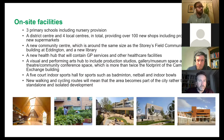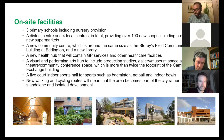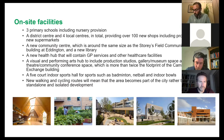The on-site facilities confirmed in the plan — as a minimum — include three primary schools with nursery provision, a district centre and four local centres generating over 100 retail units including five supermarkets, a new community centre about the same size as the Storyfield Centre in Eddington, a new library, a health hub including GP services, a visual and performing arts hub with studios, theatre space and community conference space — broadly more than twice the footprint of the Cambridge Corn Exchange — a five-court indoor sports hall, and new walking and cycling connections to ensure this isn't an isolated development.